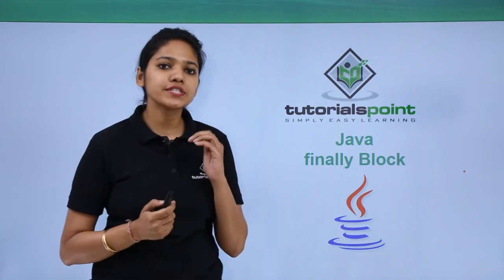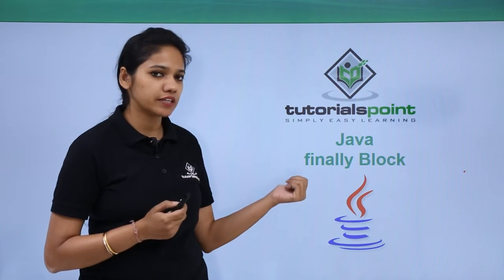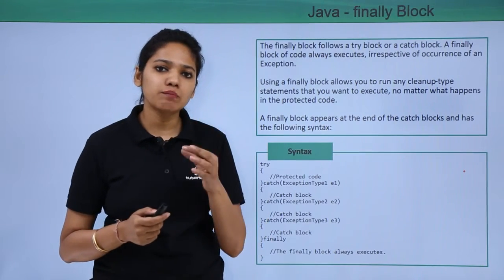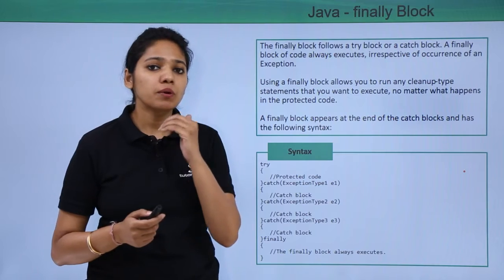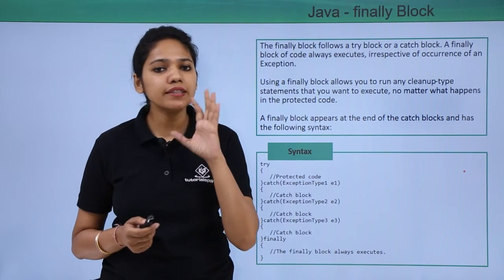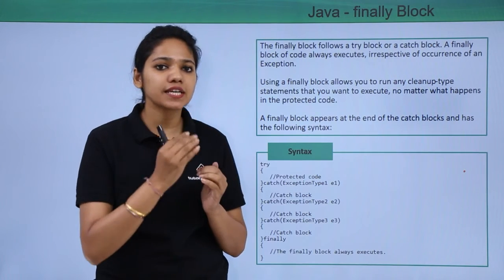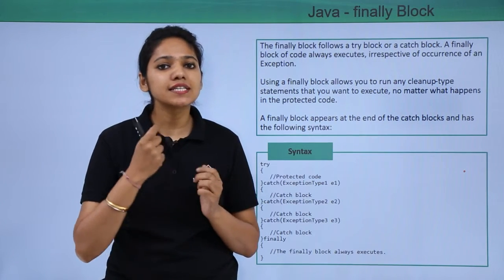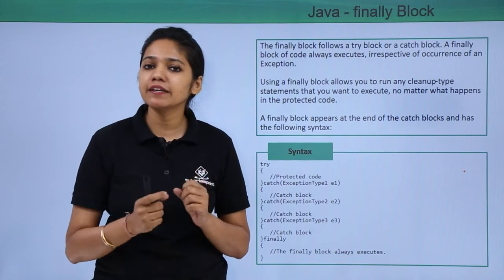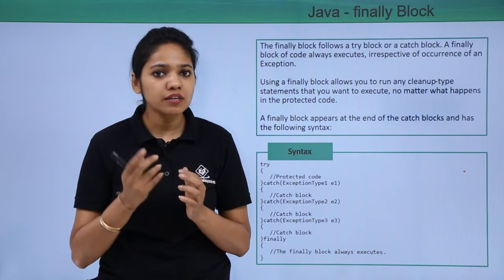The next type of block available to handle an exception is the finally block. By now we have learned what a try block does and what a catch block does, but what does a finally block do? Try is used to find out where the exception has occurred. Catch will handle those exceptions — it is the exception handler. A finally block is mainly created to avoid the consequences of resource leakage.